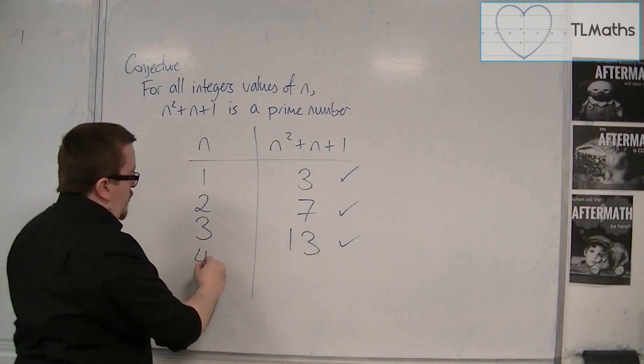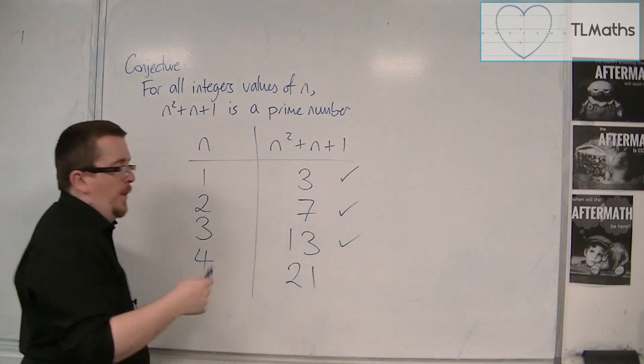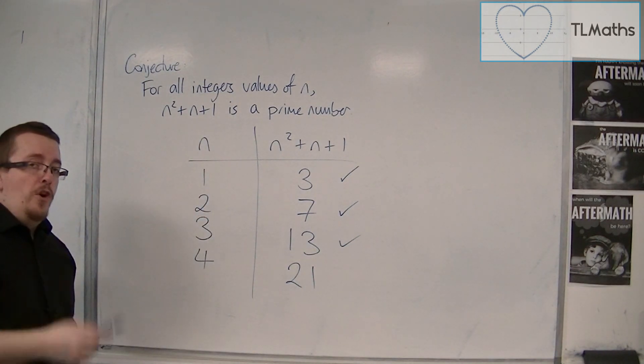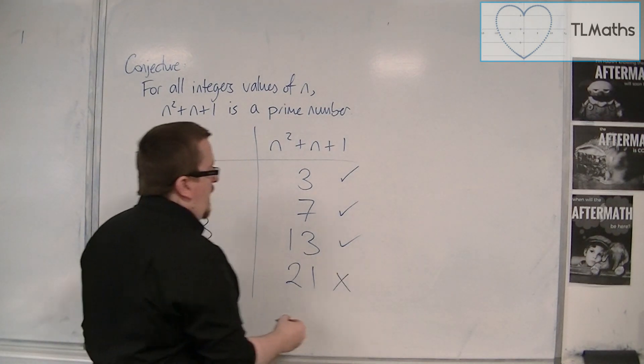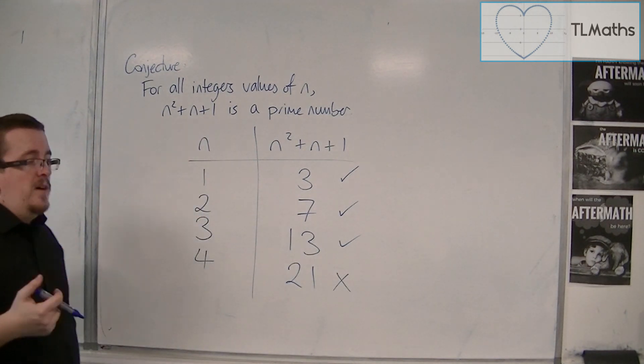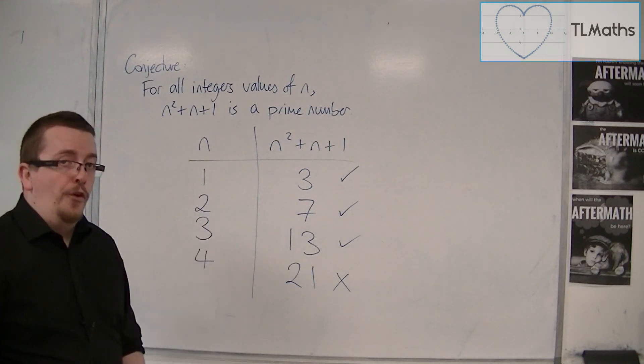Let's try 4. 4 squared plus 4 plus 1, well, that's 21. Now 21 is not prime because 21 is 3 times 7. And so that is my one example that I need to show that this conjecture is false.